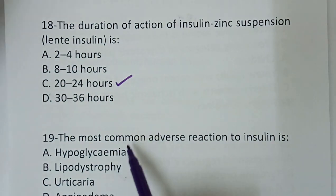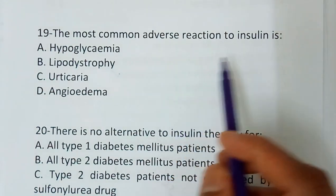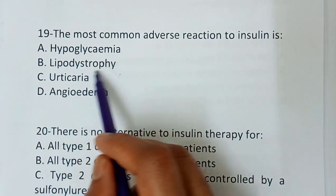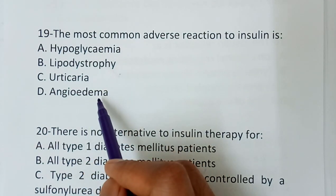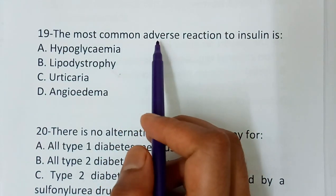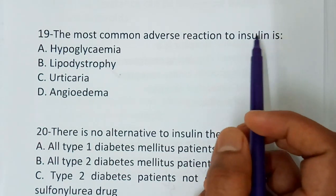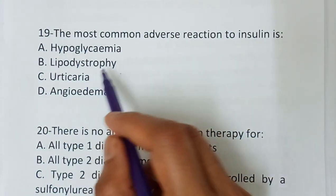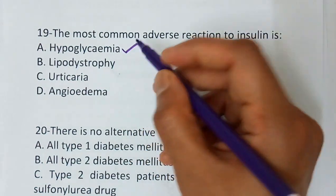Question number 19 — the most common adverse reaction to insulin is: option A, hypoglycemia; option B, lipodystrophy; option C, urticaria; option D, angioedema. The correct answer is hypoglycemia, which is the most common adverse reaction of insulin.